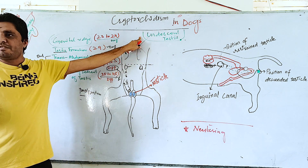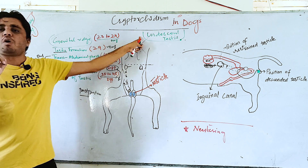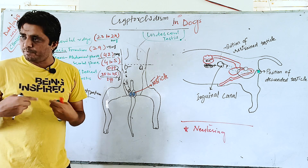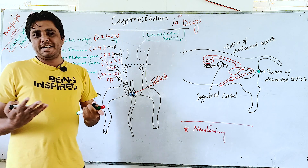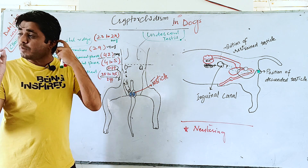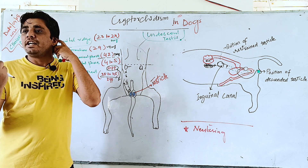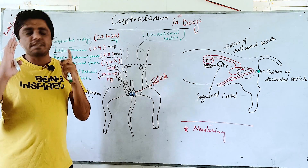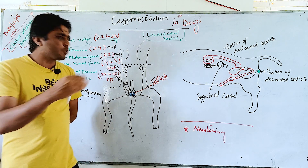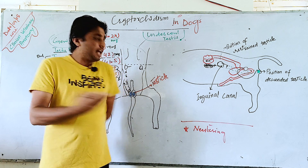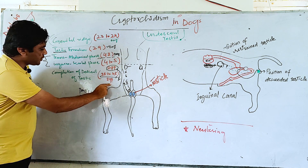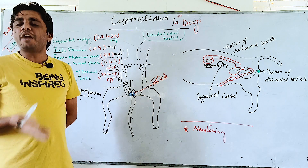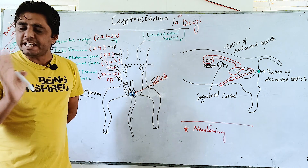As a veterinarian, one important thing: some dog owners do not have knowledge about this. After the birth of a puppy, within one month they may come to your clinic and ask why there are no testes in the scrotum. This is normal up to two months. If there are no testes in the scrotum up to two months, that is normal, because it takes one to two months for the completion of descent after parturition.